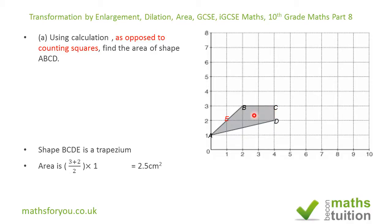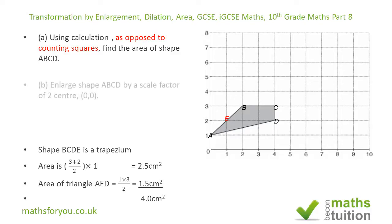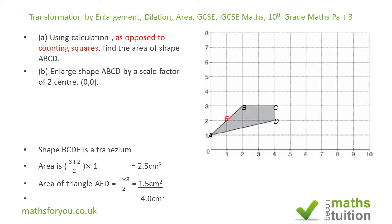The height is 1, so the area of the trapezium is 2.5 cm². For triangle AED, the height is 1 and the base is 3, so 1 times 3 is 3, divided by 2 gives 1.5 cm². Adding both the trapezium and the triangle gives the area of shape ABCD as 4.0 cm².